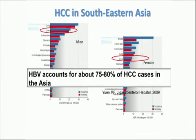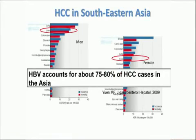If you look at the figures in Southeast Asia, liver cancer is a major killer — the second malignancy in men and the fifth in females. And again, viral hepatitis B accounts for almost 80% of hepatocellular carcinoma cases.